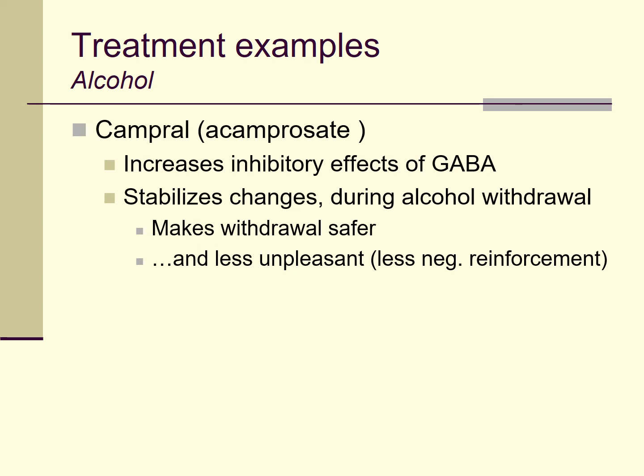There are other drugs including acamprosate, marketed under the name Campral. Campral increases some of the inhibitory effects of GABA, which is normally an inhibitory neurotransmitter — Campral modulates up some of the GABA systems in your brain. This can stabilize mood changes during alcohol withdrawal, making withdrawal safer and less unpleasant. So if you're in acute detox for alcohol use, you might be given Campral, possibly alongside anti-seizure medications. Or you can take Campral by prescription even if you're just withdrawing from alcohol on your own — it makes people more comfortable during that withdrawal process, so there's less negative reinforcement for going back to drinking.